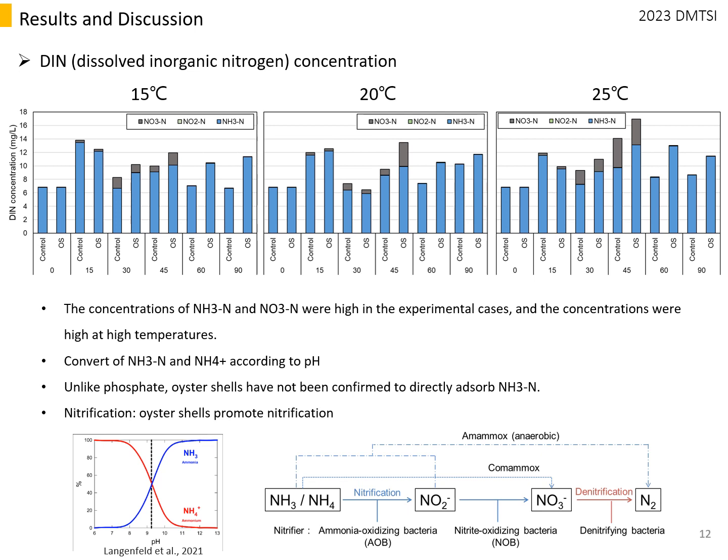The increase in ammonia concentration in the experimental cases may be related to the conversion between ammonia and ammonium ions. Within the pH range of this study, the proportion present in the form of ammonia increases as pH increases.